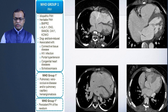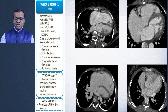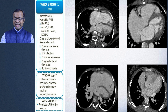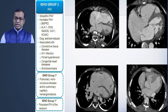Group 1 is pulmonary arterial hypertension. Beyond idiopathic cases, we're more interested in shunts — ASD, VSD, and anomalous pulmonary venous return. These congenital heart diseases form part of Group 1.